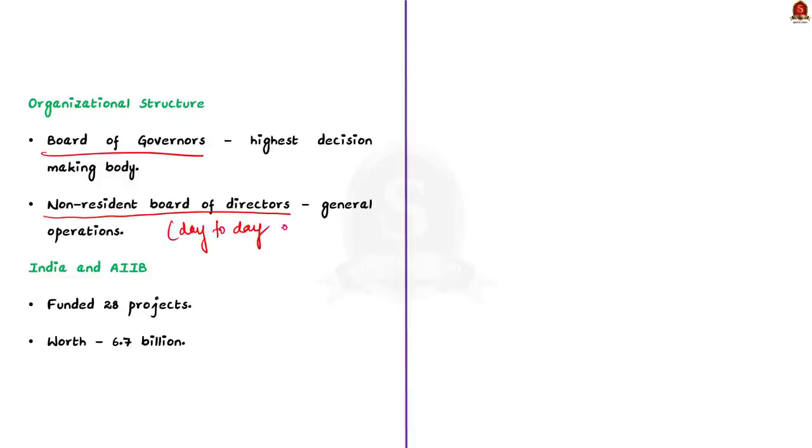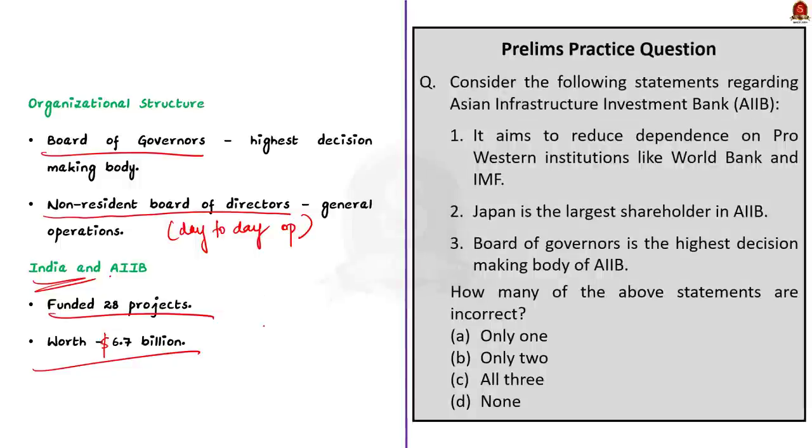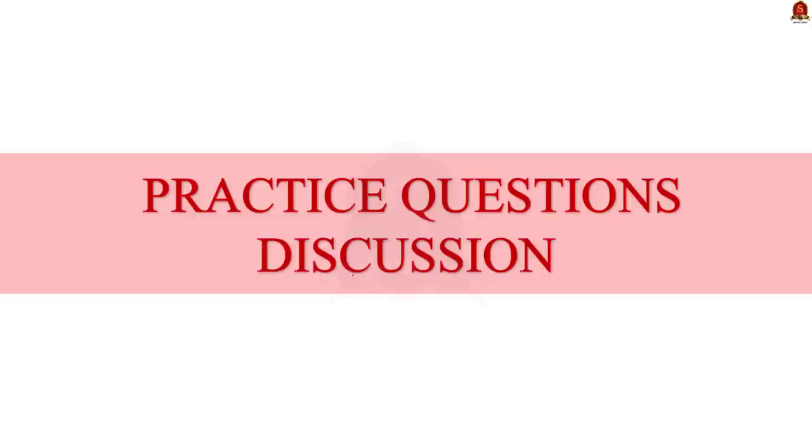Finally, let's talk about AIIB's contribution to India. It has funded 28 projects in India so far and the total worth is approximately $6.7 billion. These projects cover various sectors and have been aimed at promoting infrastructure development and economic growth in India. That's it for today's discussion. I hope you gained a good understanding of all the topics we discussed today. If you have any questions, feel free to ask in the comment section. With this note, now we will take up the practice questions.